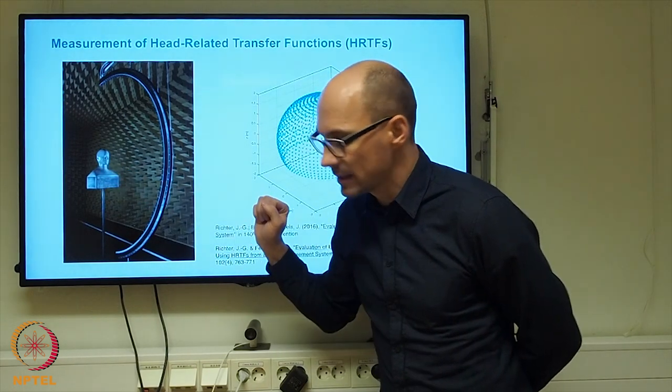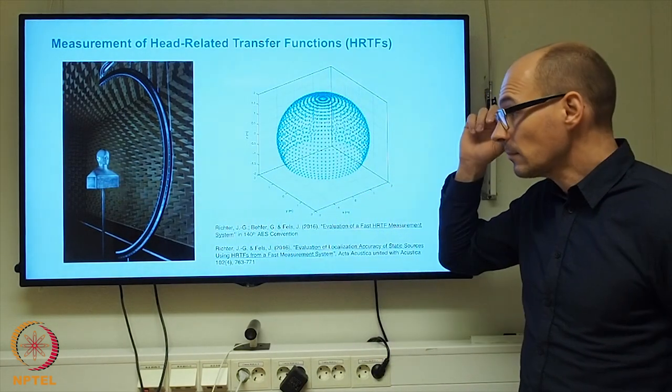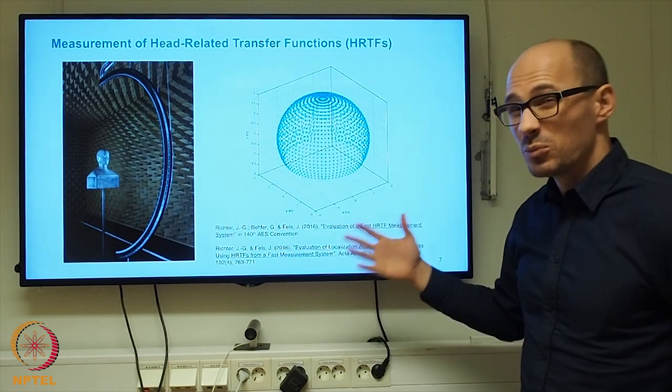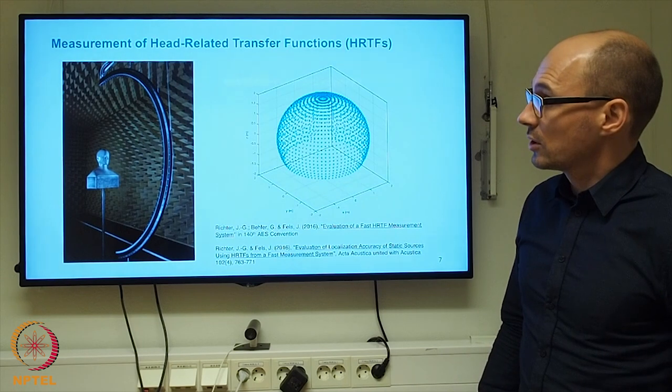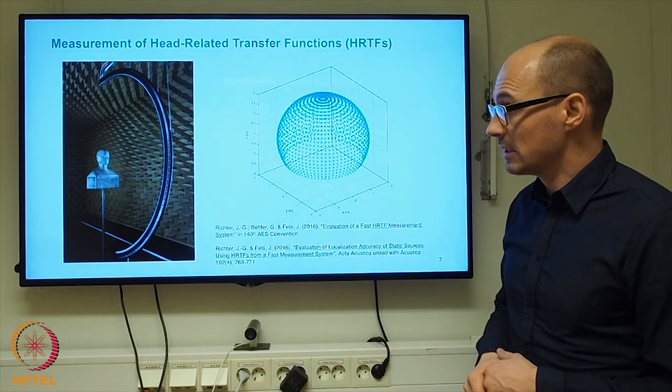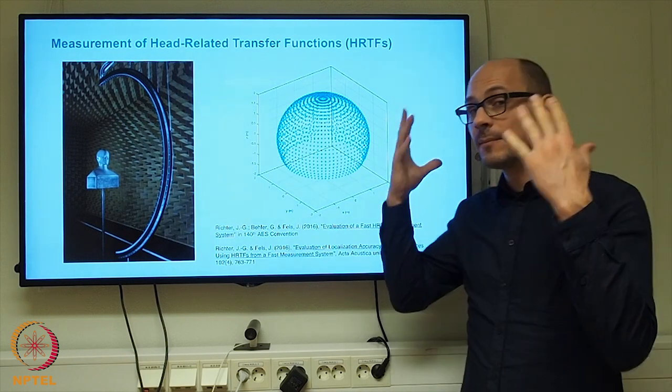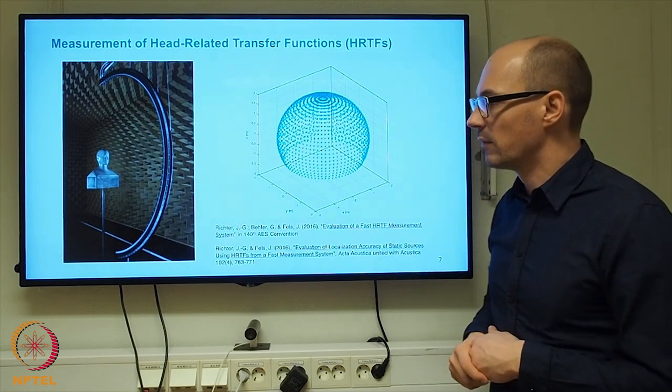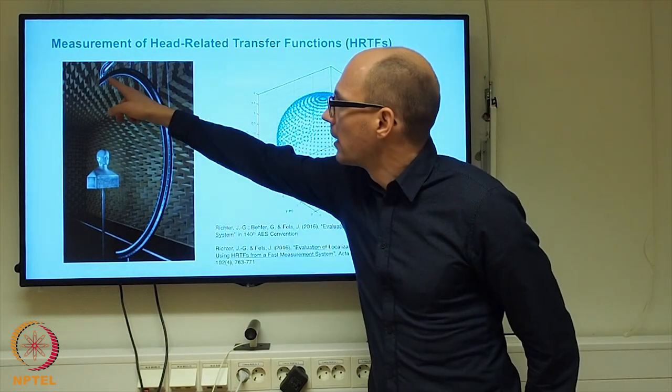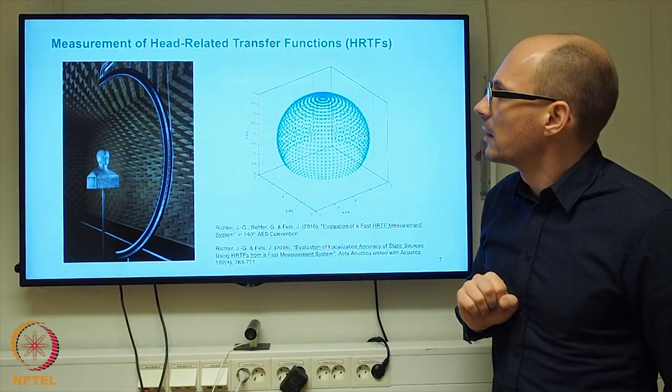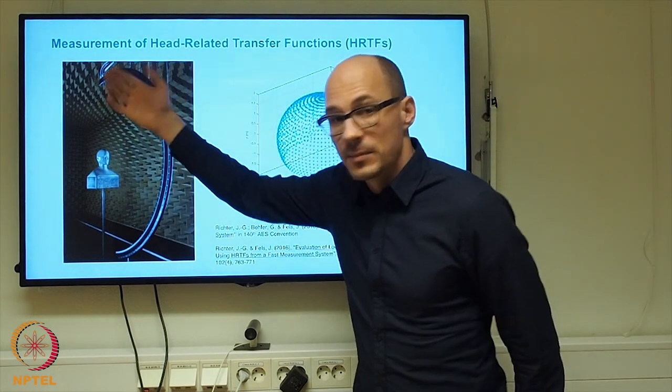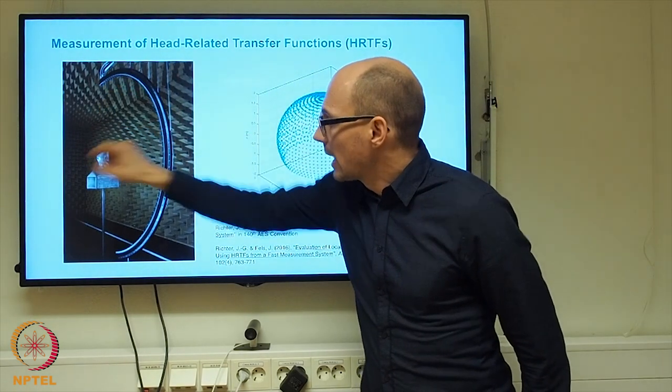A user, or in this case, a dummy head, is sat into an anechoic chamber, because one would usually not want to measure the acoustic cues of a room, of a specific room. One wants to do this in free field to capture only the acoustic properties of the body. And then there will be loudspeakers. For example, in this case, there are loudspeakers distributed over this arc, and they will play sounds, a specific measurement signal, that will be captured by the ears.